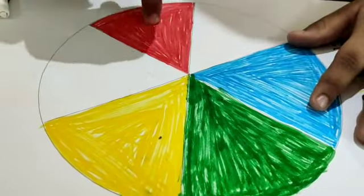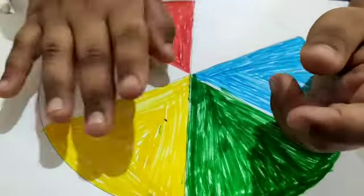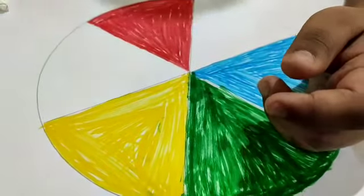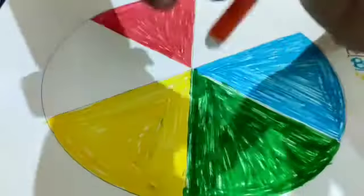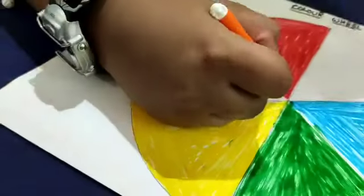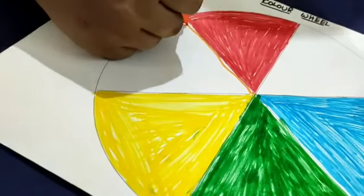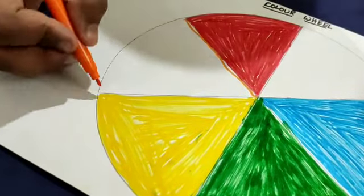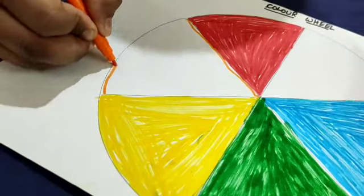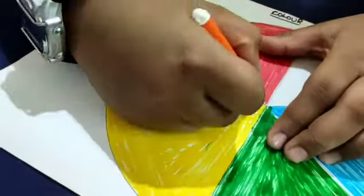Now if you mix red plus yellow, you will get orange color. Now I am coloring orange. So the easy way to color is, first draw the pattern like this.